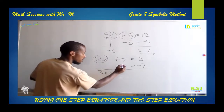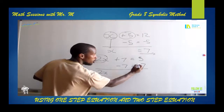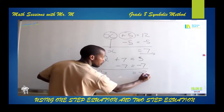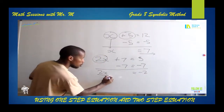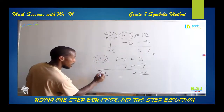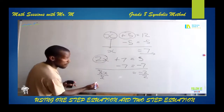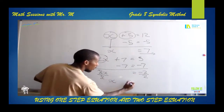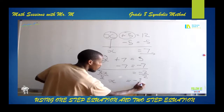You are going to bring down this 2X right here. 2X. 7 minus 7, you are going to get 0. Equals to 5 minus 7, it's a negative 2. And therefore, you are going to divide on both sides by 2, taking away the 2 that is right next to X. And therefore, your X is going to be equal to negative 1.